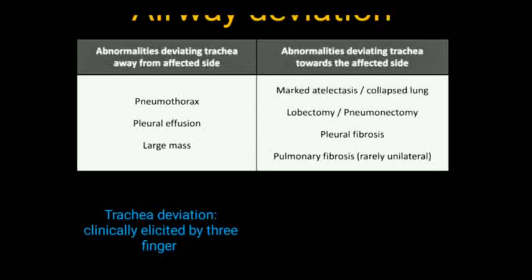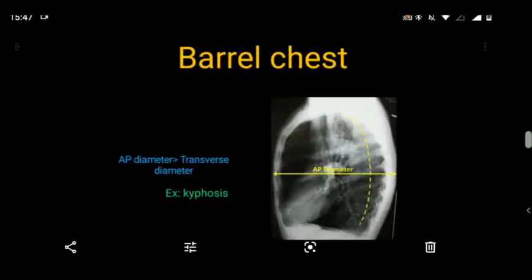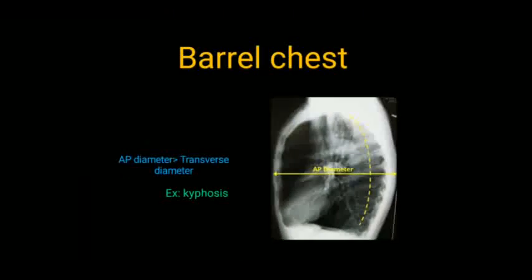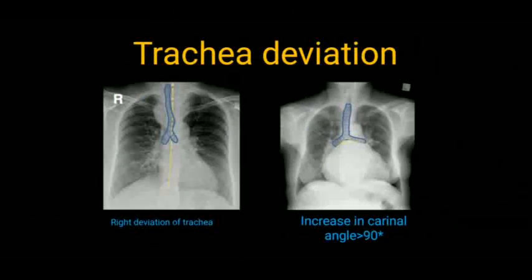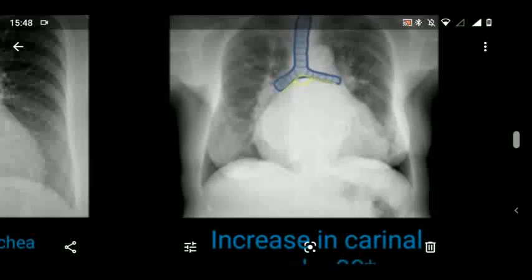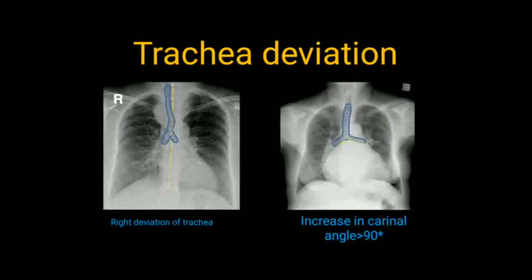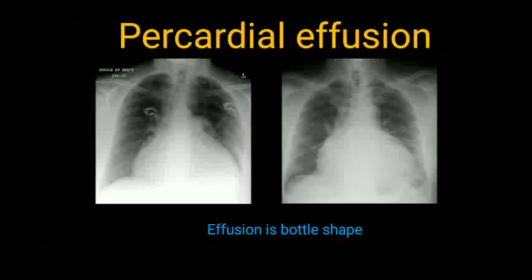Tracheal deviation is assessed clinically by the three-finger test. When the anteroposterior diameter is more than the transverse diameter, it is known as barrel chest — seen in kyphosis. Tracheal deviation can be to the right or left side. We also look at the carinal angle — an increase in the carinal angle more than 90 degrees is seen in pericardial effusion, which is bottle-shaped.